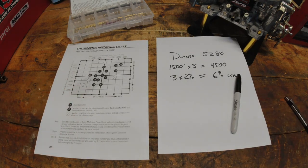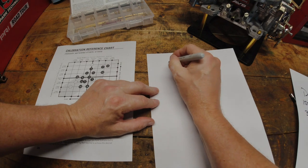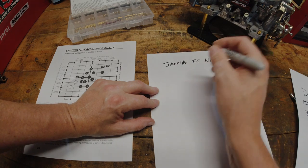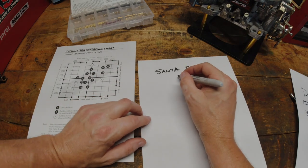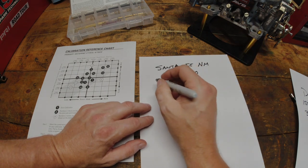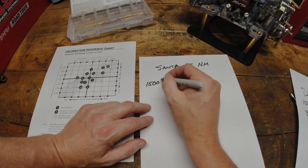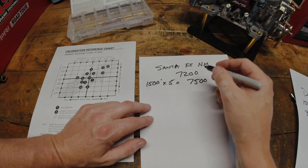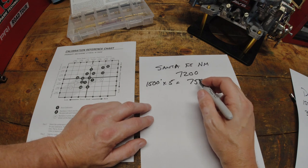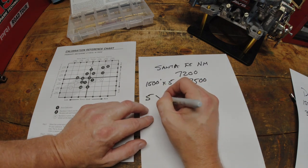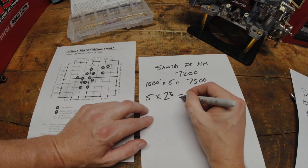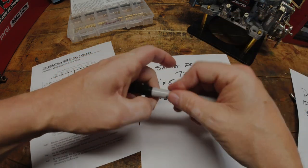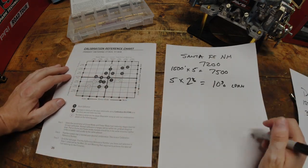Now, let's talk about Santa Fe here. We said that that is approximately 7,200 feet. Now, let's get us close to that. So, 1,500 feet times 5 will get us to 7,500. Again, we're within 1,000. Perfect. That's about as dialed in as you're going to get. Okay, now, 5 times the 2% lean that we want to be will give us 10% lean. That's where we want to move in that calibration if we were going to go to Santa Fe, New Mexico.